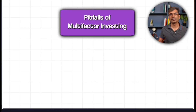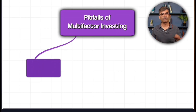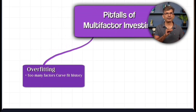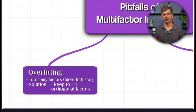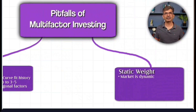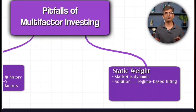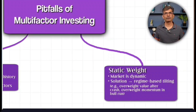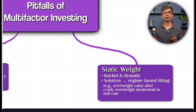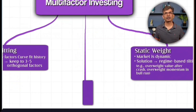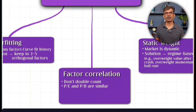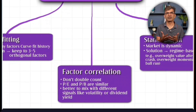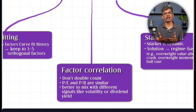But nothing comes without pitfalls. First, overfitting — too many factors that curve-fit history. Solution: keep 3 to 5 orthogonal factors. Second, static weights — the market is dynamic. Solution: use regime-based tilting — overweight value after a crash, overweight momentum in a bull run. Third, factor correlation — some factors are highly correlated, so don't double-count them. Price-to-earnings and price-to-book value are quite similar. Better to mix different signals like volatility and dividend yield.